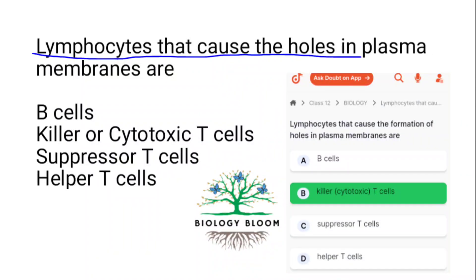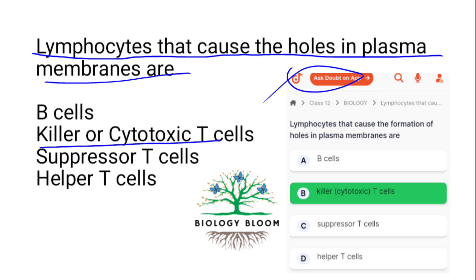Lymphocytes that cause holes in the plasma membrane — taken from DoubtNut as it is — are killer and cytotoxic T cells. They are a type of white blood cells.